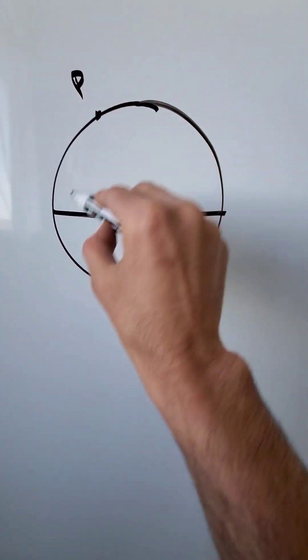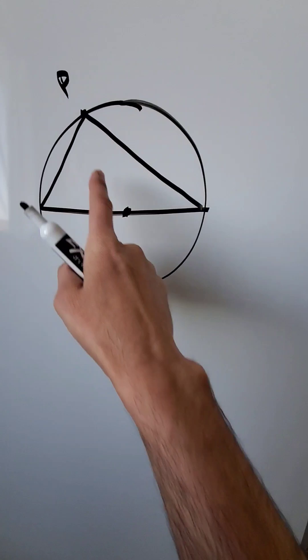Pick any point. I'm calling this point P. I'm going to connect the ends of the diameter to that point P. I've generated a triangle.